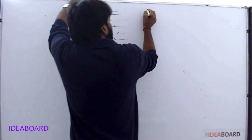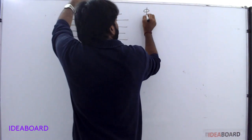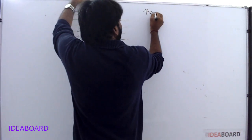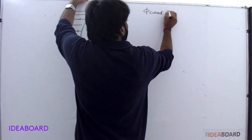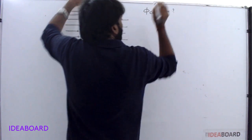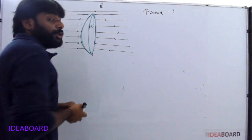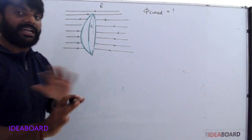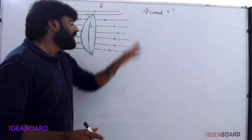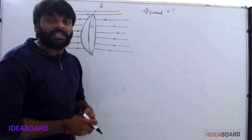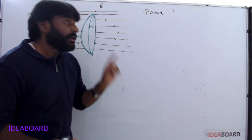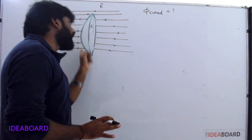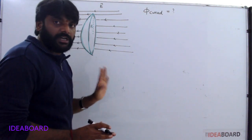The required quantity is: what is the flux through the curved surface? You are asked only for the flux through the curved surface, not the total flux.